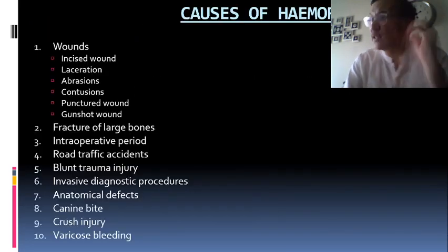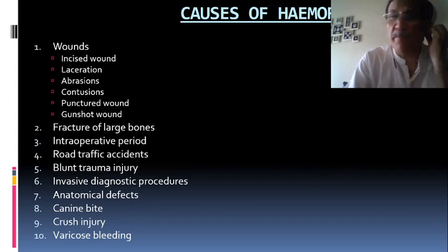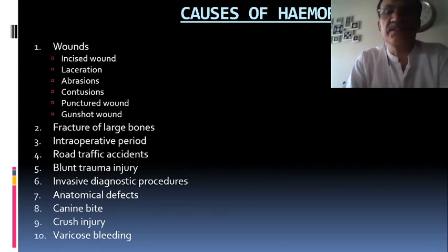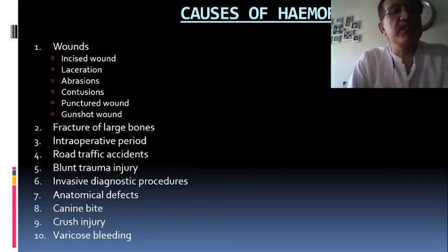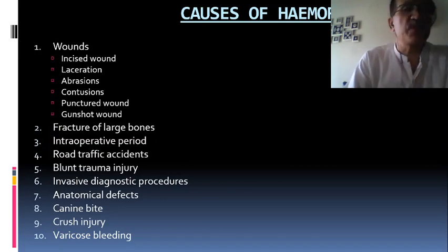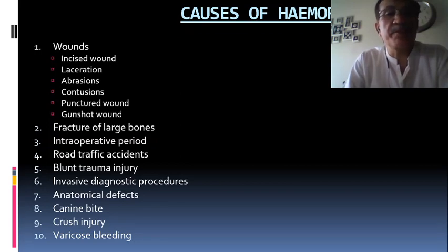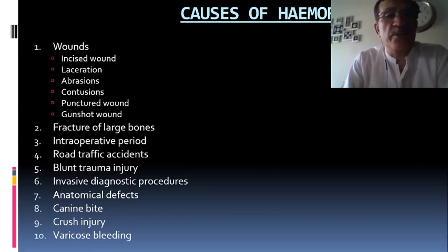The causes of hemorrhage that we encounter in daily life include wounds such as incised wounds, lacerations, abrasions, puncture wounds, and gunshot wounds. Fracture of large bones, intraoperative bleeding, and road traffic accidents resulting in multiple trauma are also common causes.